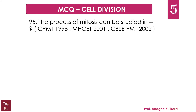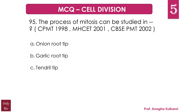Question number 95: The process of mitosis can be studied in — A. Onion root tip, B. Garlic root tip, C. Tendril tip, D. All of the above. The correct answer is D. All of the above, because all of these consist of meristematic cells, which are actively dividing cells that divide by mitosis and bring about the growth of their respective parts.